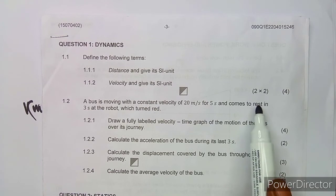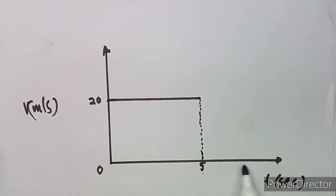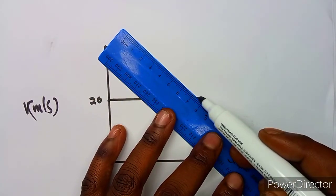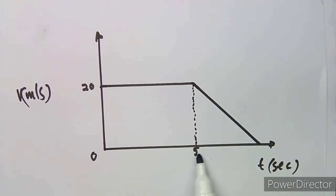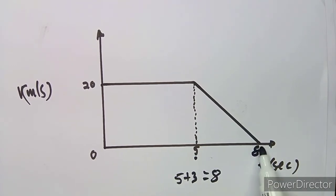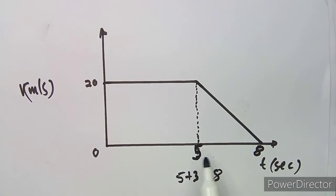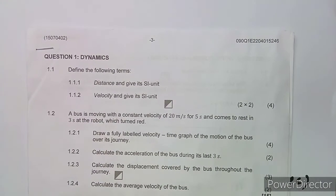Then it comes to rest — take note, when it comes to rest the velocity is at zero. This takes three seconds. Five plus three equals eight, so it comes to rest at time equals eight seconds. The line goes downward from 20 m/s at t=5 to zero at t=8. That is your velocity-time graph, worth four marks.